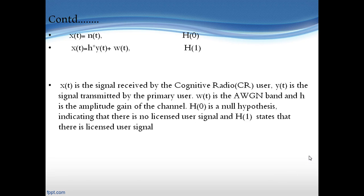Here, x(t) is the signal received by the cognitive radio or secondary user and y(t) denotes the signal transmitted by the primary or licensed user. w(t) is the additive white Gaussian noise and h is the amplitude gain of the channel. H0 is called the null hypothesis, which states that there is no primary or licensed user in the spectrum, and H1 is called the alternate hypothesis, which states that there is a licensed user in the spectrum. These are the two basic equations used behind spectrum sensing in cognitive radio.